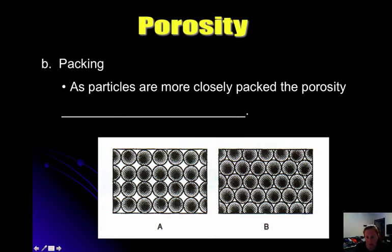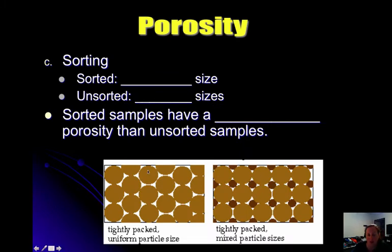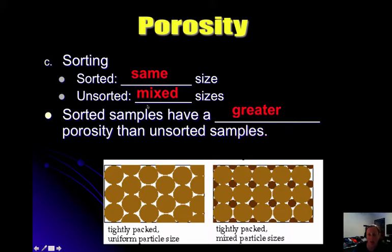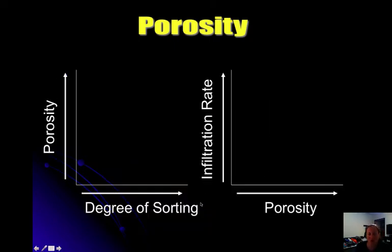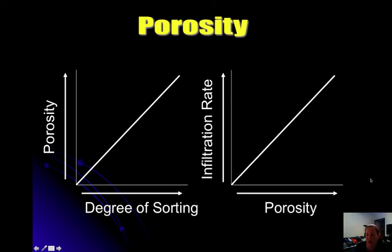Looking at how packed particles are: if you have the same size and shape but some are loosely arranged and others are pushed tightly together, you can see that pore spaces have decreased when packed. So if particles are more closely packed, porosity decreases. Sorted samples — uniform size and shape — have greater porosity than unsorted samples, where mixed sizes fill in the gaps. As sorting increases, porosity also increases. And as porosity increases, infiltration rate also increases — the more space there is, the easier water seeps into the ground.